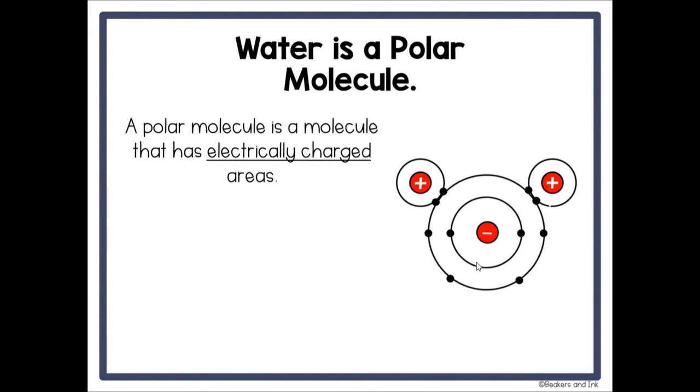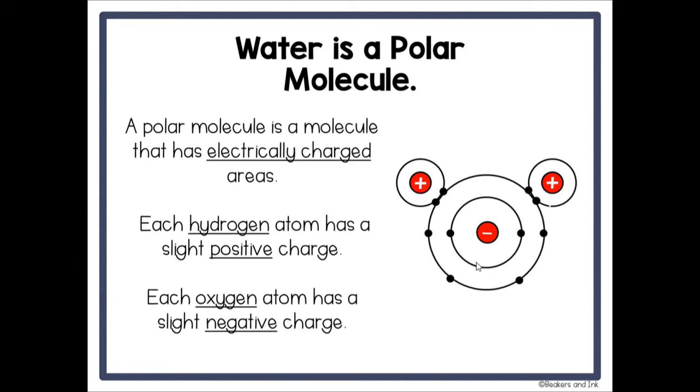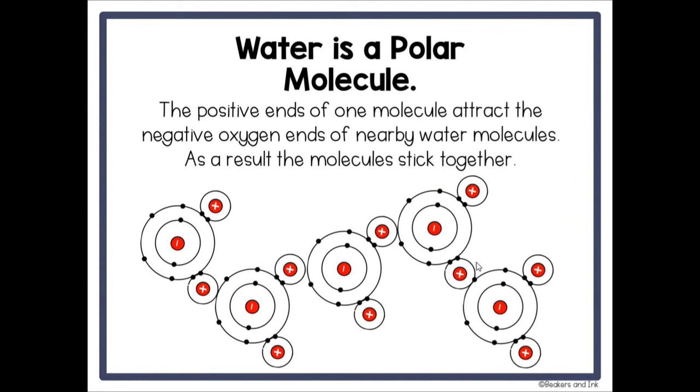Water has this really cool property, which means it is a polar molecule. Polar molecules are molecules that have electrically charged areas. If we go back to our water molecule and we look back at the Mickey Mouse shape, you can see that the ears, which are our hydrogen atoms, are represented with positive signs. That's because the hydrogen atoms have a slightly positive charge. The oxygen atom in the center has a slightly negative charge. That's because water is a polar molecule, so it has electrically charged areas. Hydrogen positive, oxygen negative. And we know that different charges attract each other.